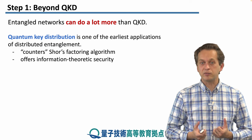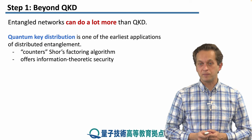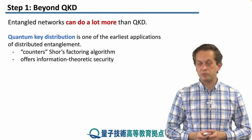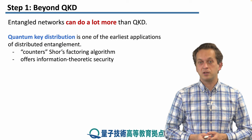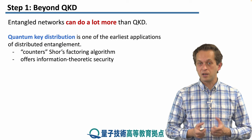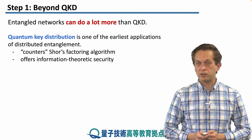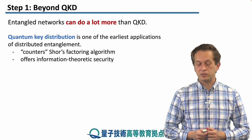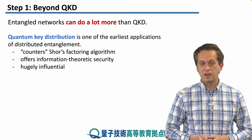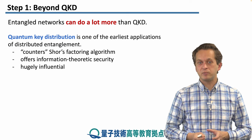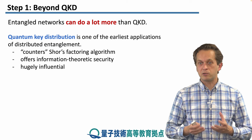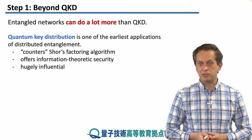QKD offers information-theoretic security. We learned about various quantum key distribution protocols in our previous module on overview of quantum communications, and we talked about the E91 QKD protocol that uses entanglement to distribute quantum keys. For this reason, quantum key distribution has been hugely influential and it really drove the development of further applications.